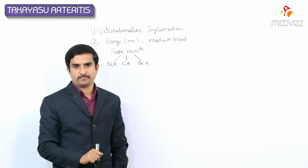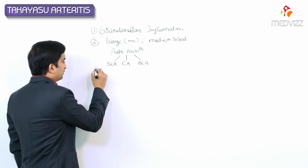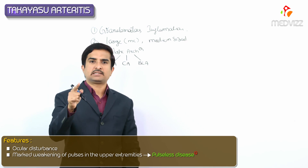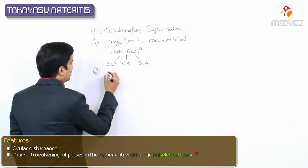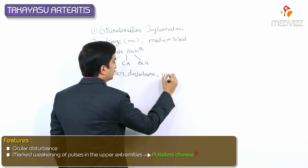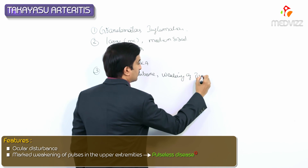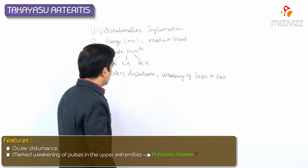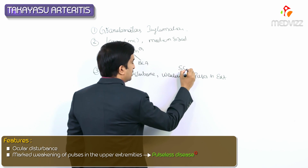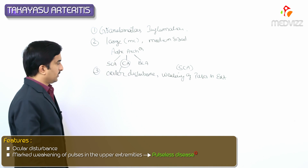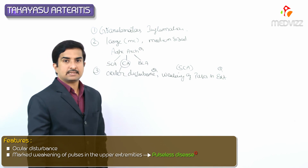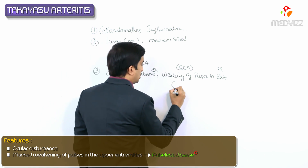That is the reason we are also calling it as aortic arch syndrome. It is typically characterized by ocular disturbance and marked weakening of pulses in the upper extremities. The ocular disturbance is because of the involvement of the carotid artery, and weakening of pulses is because of the involvement of the subclavian artery.